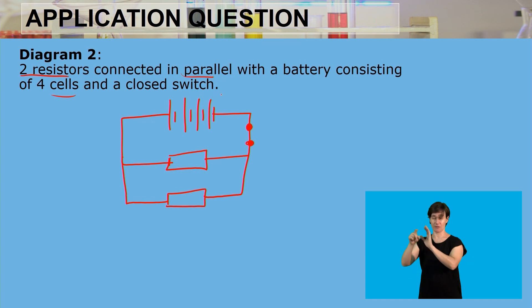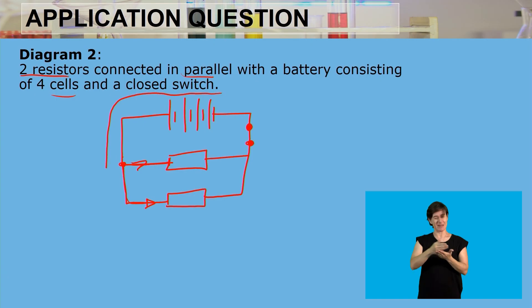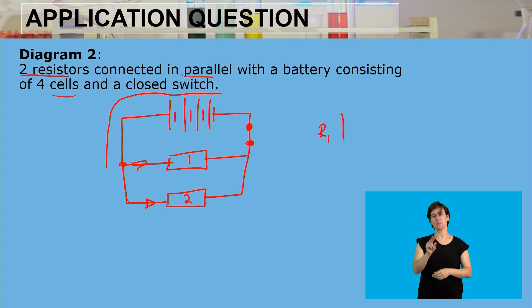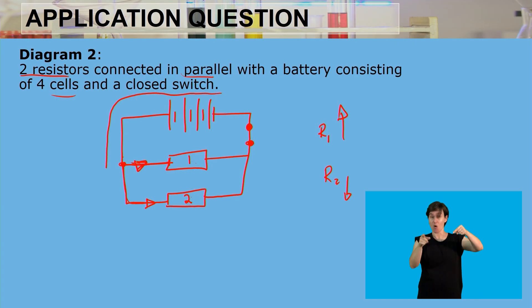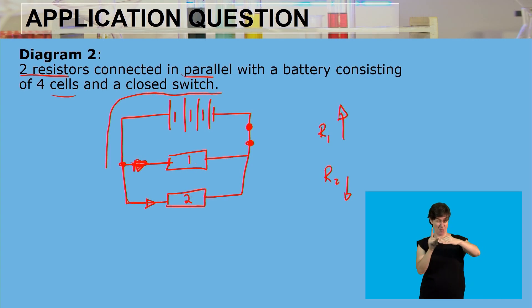Again, as the current moves from the negative terminal to the positive terminal, once it reaches the junction, it has to divide — some goes through one resistor and the other portion through the second resistor. Current divides proportionally: if resistor one has higher resistance than resistor two, the current through R1 will be lower. Current always chooses the path with the least resistance, so more current flows toward the resistor with the least resistance.